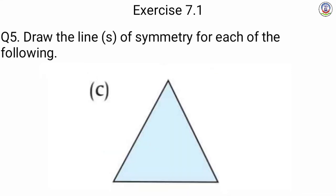Next is C — we have a figure of a triangle. हम लोग को C में triangle का figure दिया गया है. Triangle cuts from vertical line of symmetry — यह isosceles triangle है जिसकी दो sides आमने सामने equal हैं, तो वो हमेशा vertically line of symmetry draw होती है.